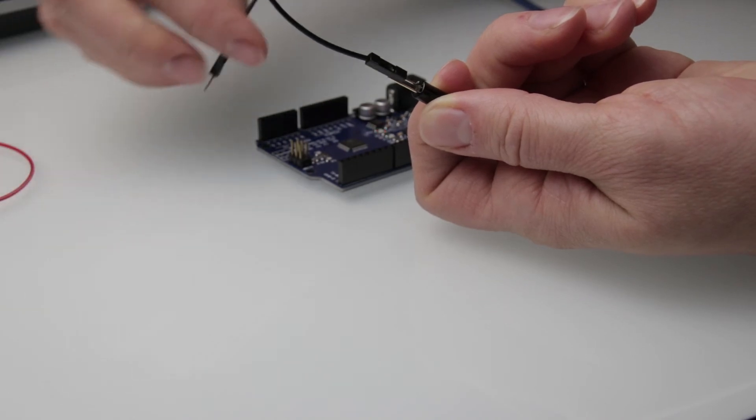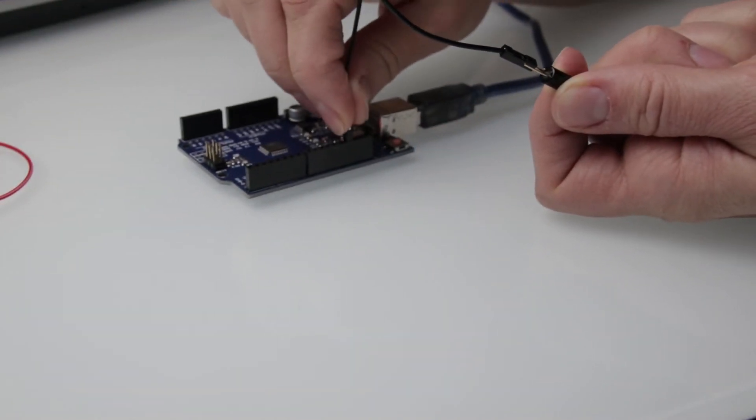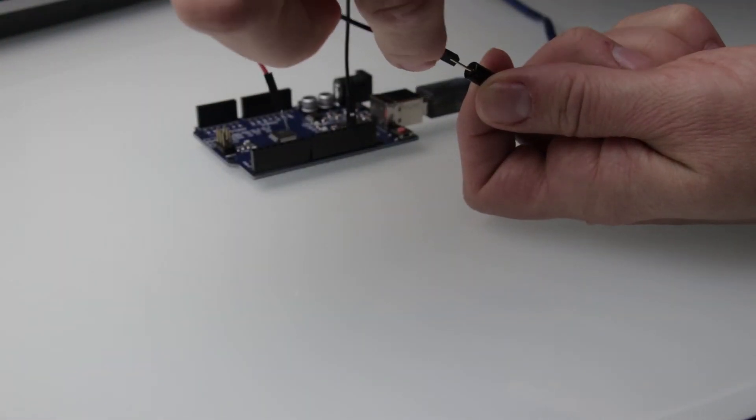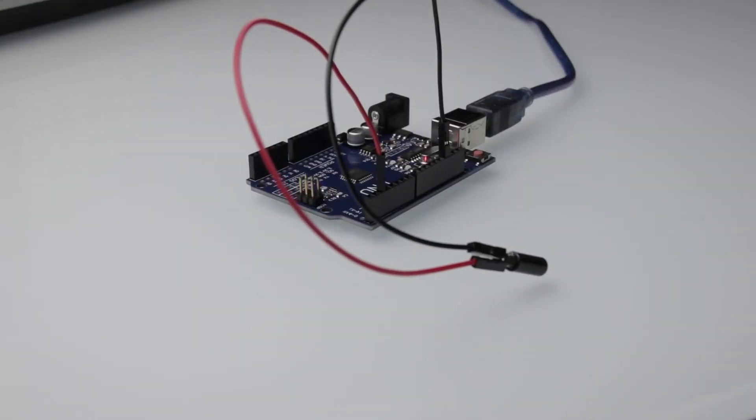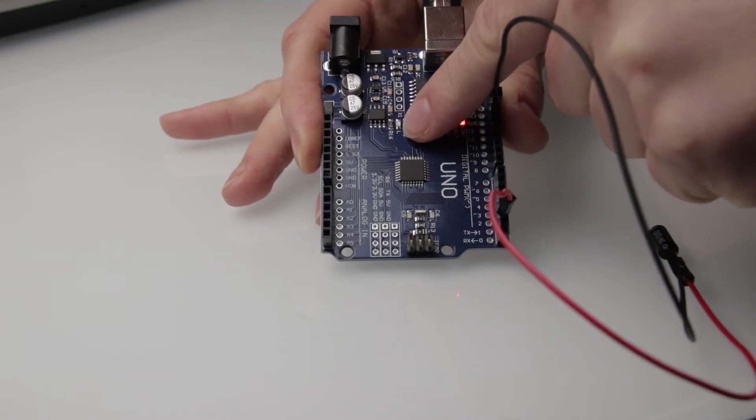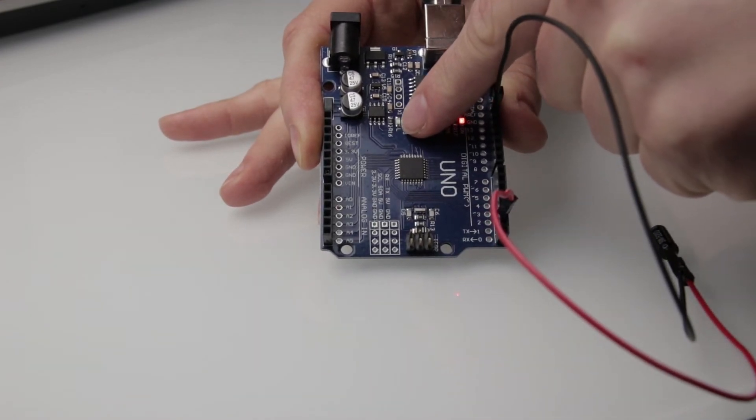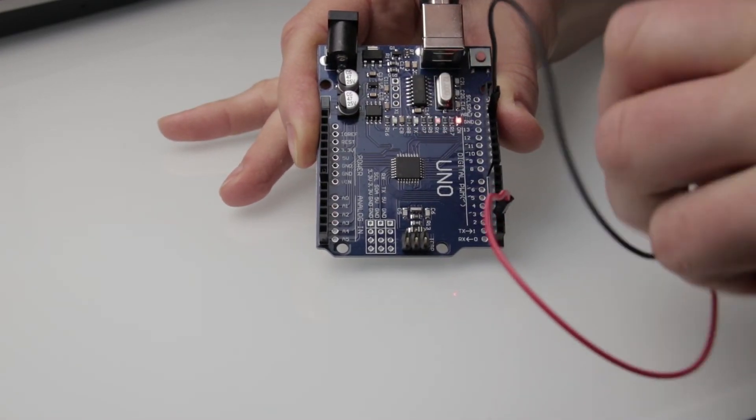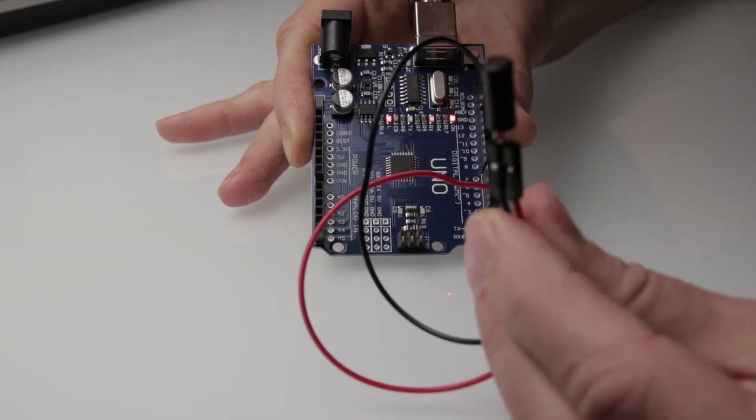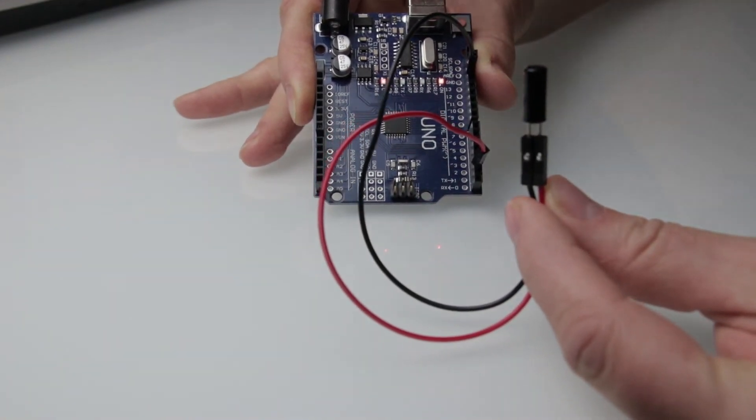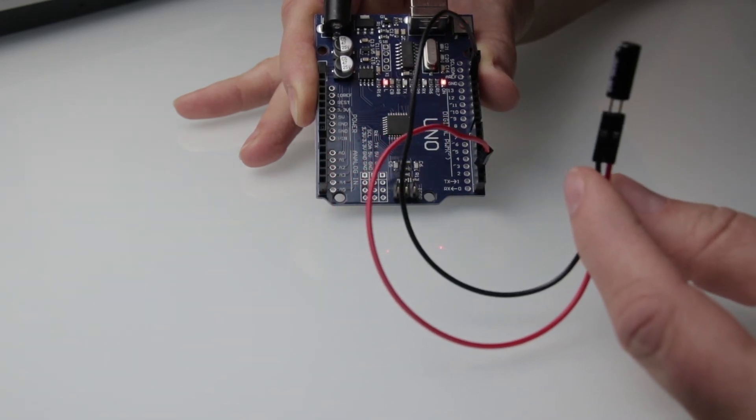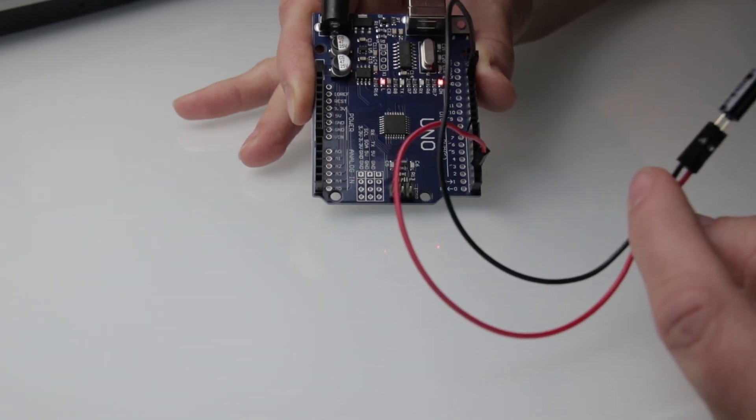I am connecting ground to one lead of the tilt ball switch. Next I'm wiring the other side of the switch to pin D2. Arduino has a single LED that you can control from your sketches. This LED is built onto the Arduino board and is often referred to as the L LED. We will be using it to display the value of the tilt ball switch by connecting to pin D13.